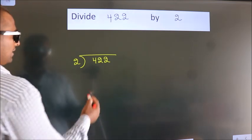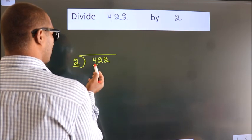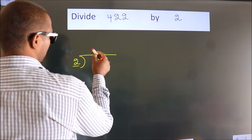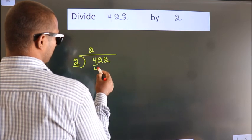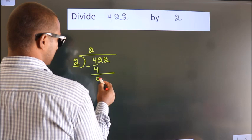Next. Here we have 4, here 2. When do we get 4? In 2 table. 2 2s, 4. Now we should subtract. We get 0.